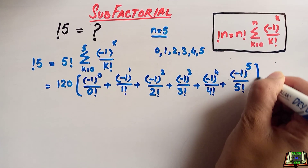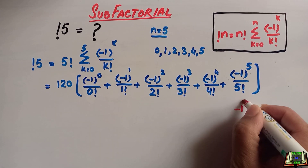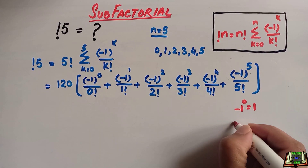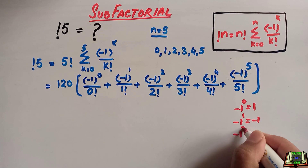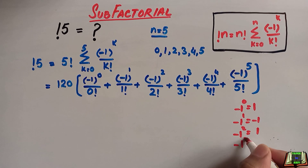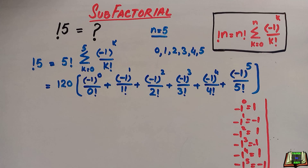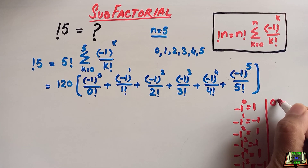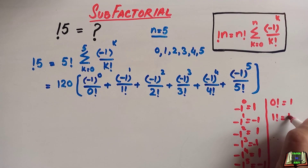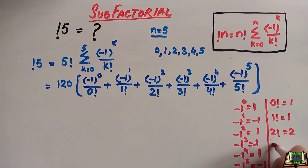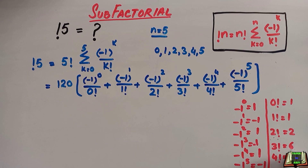Let's simplify these values. Minus 1 to the power 0 is 1; minus 1 to the power 1 is minus 1; minus 1 to the power 2 is 1; minus 1 to the power 3 is minus 1; minus 1 to the power 4 is 1; minus 1 to the power 5 is minus 1. And: 0 factorial is 1, 1 factorial is 1, 2 factorial is 2, 3 factorial is 6, 4 factorial is 24, 5 factorial is 120.